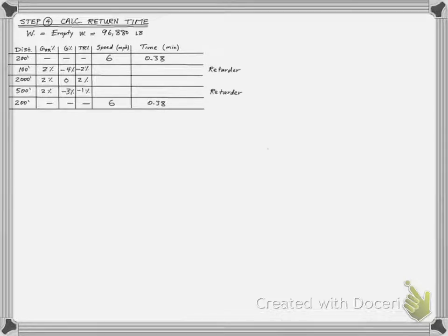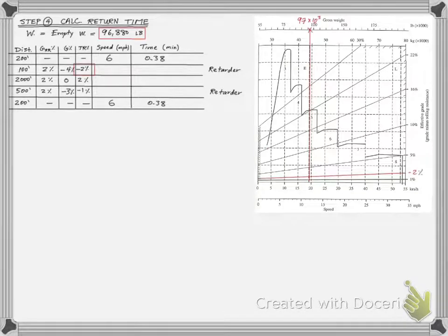For these two segments, we will need to use the retarder chart. We use the retarder chart as shown for the second segment with negative total resistance of 2%. We got that the scraper will drive on the eighth gear with a maximum possible speed of 33 miles per hour, which translates into 0.03 minutes of travel time on this segment.